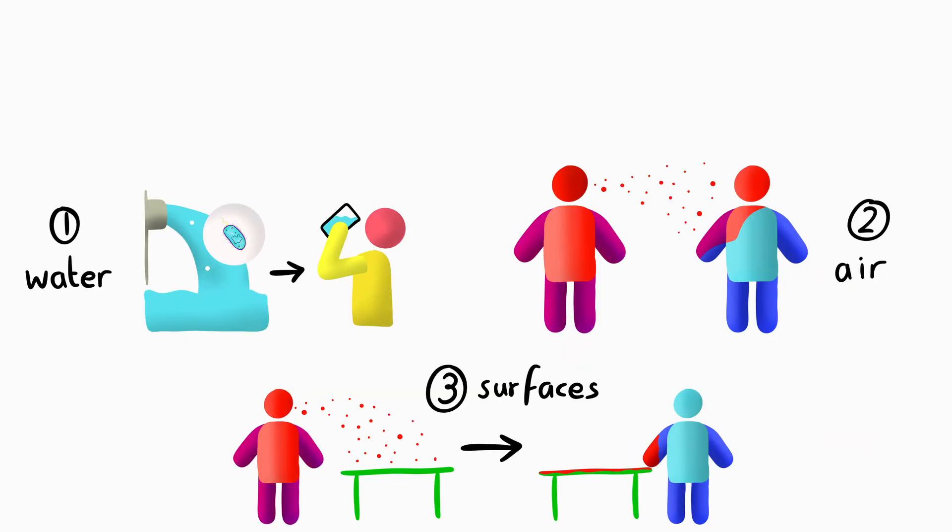Regarding transmission, pathogens spread through three primary routes. The first involves water, where organisms contaminate drinking sources or recreational waters. For instance, certain bacterial infections occur when people consume water containing waste from infected individuals.